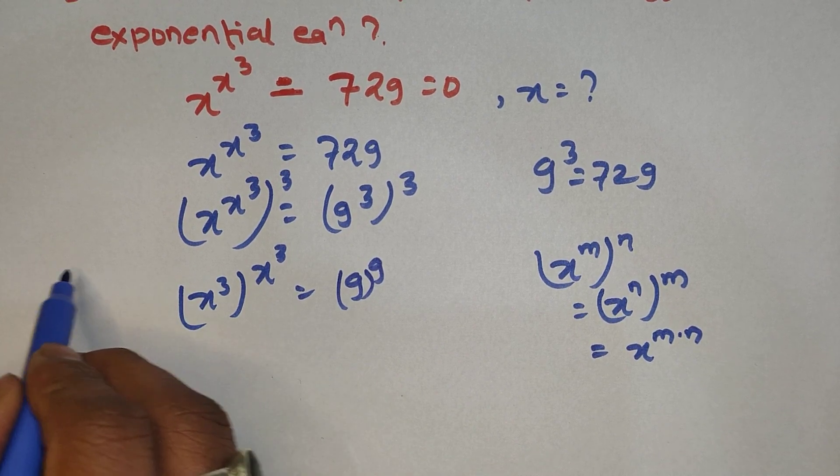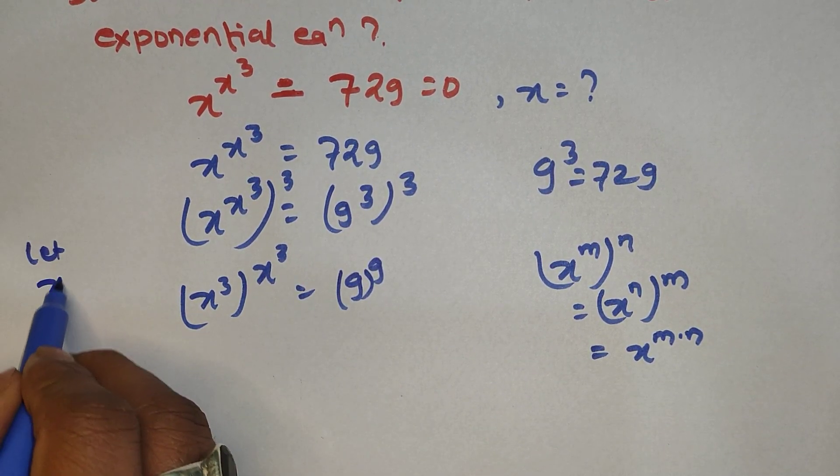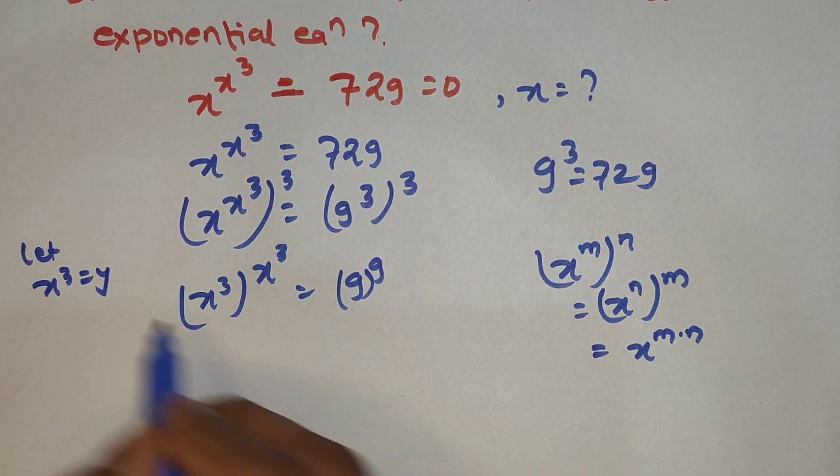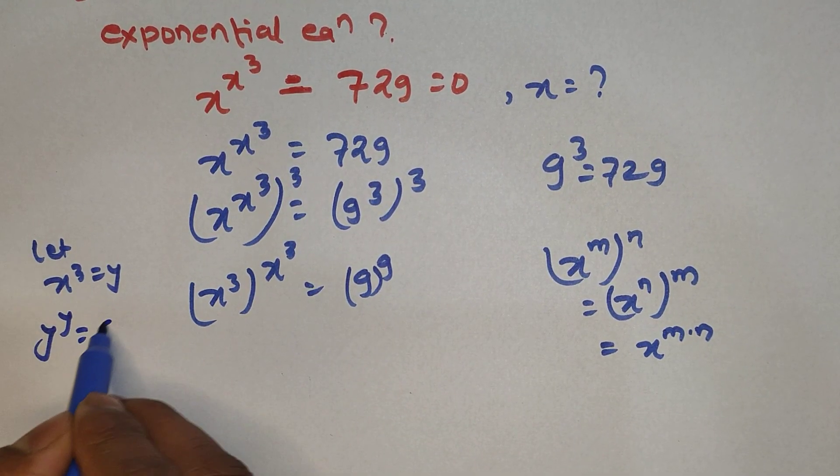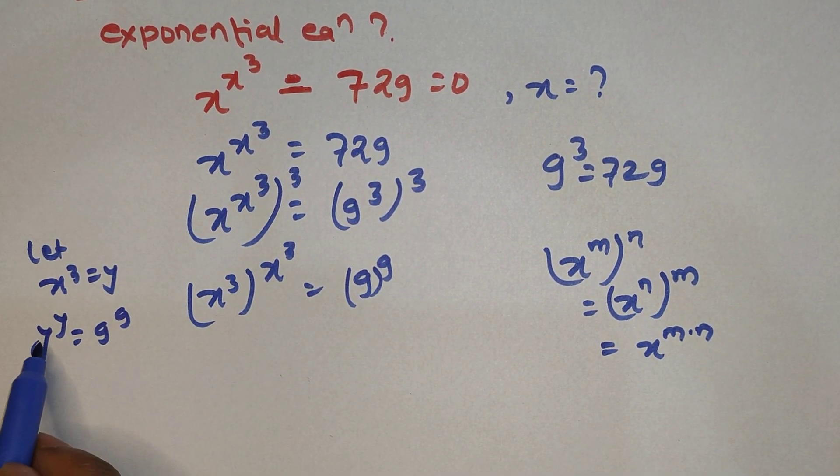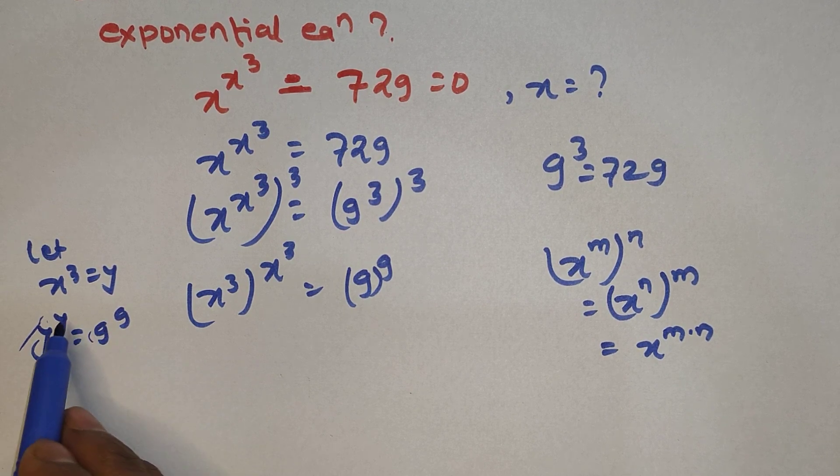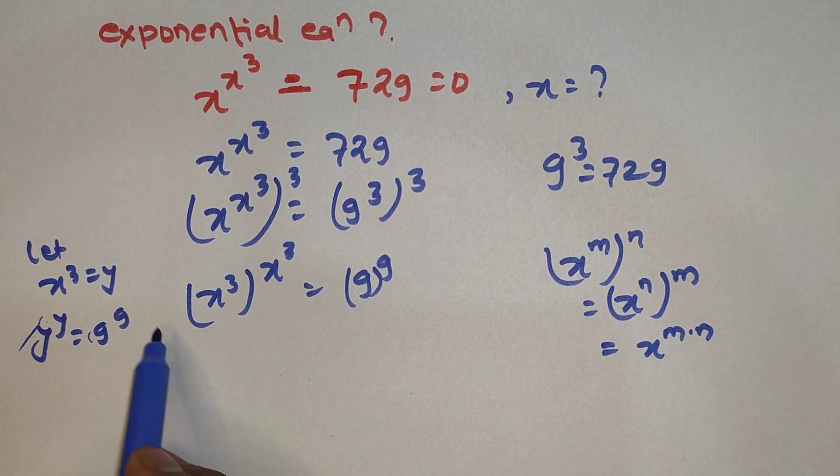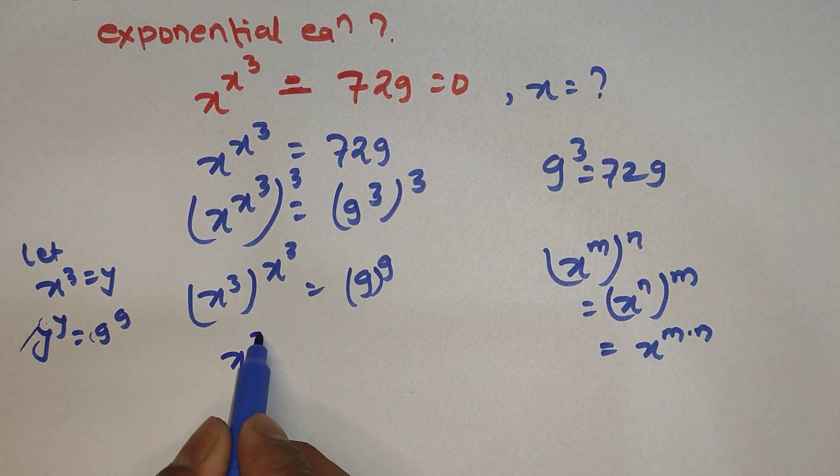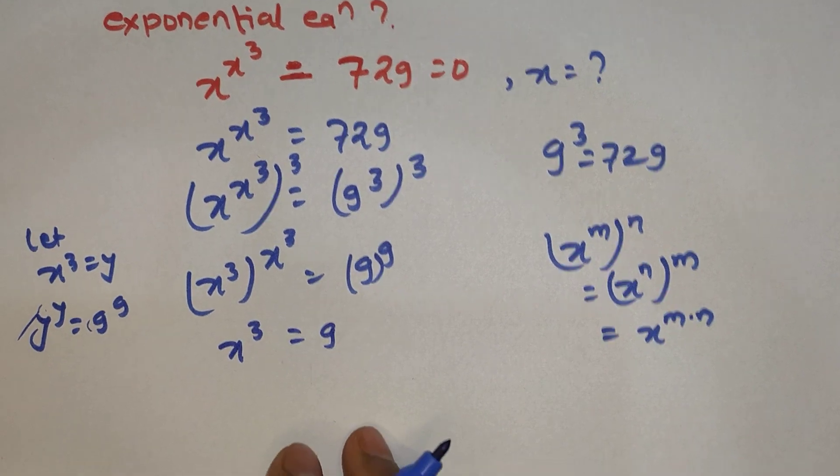From here we can see that if we let x to the power 3 equal y, then this becomes y to the power y equals 9 to the power 9. From here we can say that y equals 9, so we can say that x to the power 3 equals 9.